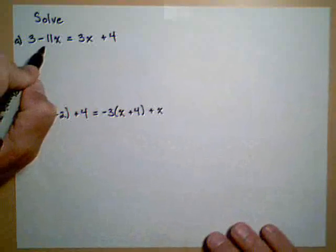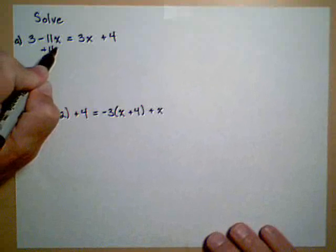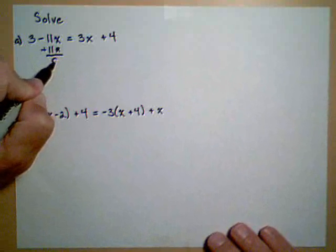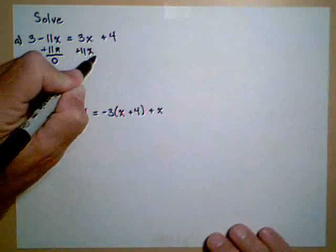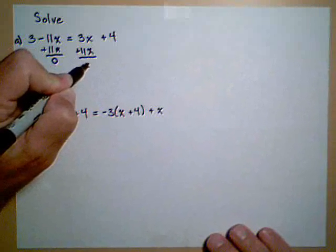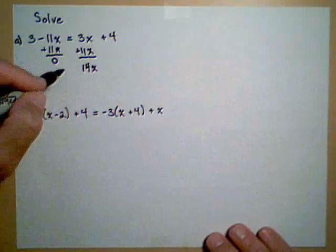For instance, we may decide to add 11x to both sides. So that'll get rid of it on this side and move it over to this side. And that gives us 14x on the right-hand side.